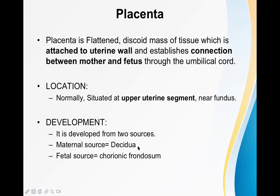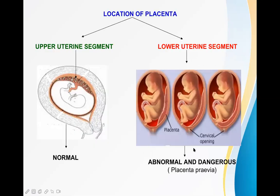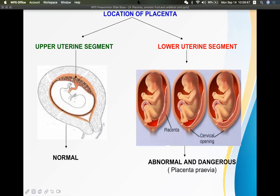The placenta has two developmental sources: a maternal source from the decidua basalis, and a fetal source from the chorion frondosum.